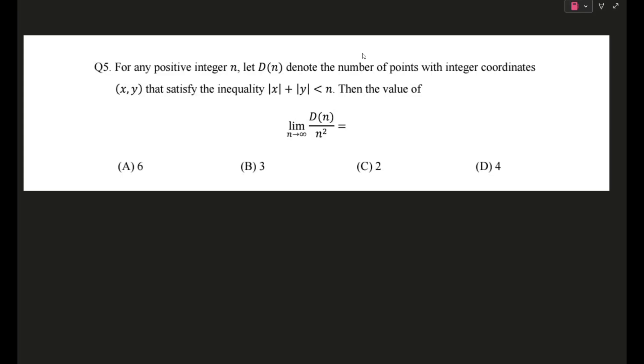Okay guys, so without further ado let's start solving. For any positive integer n, let D(n) denote the number of points with integer coordinates (x, y) that satisfy this inequality |x| + |y| < n.